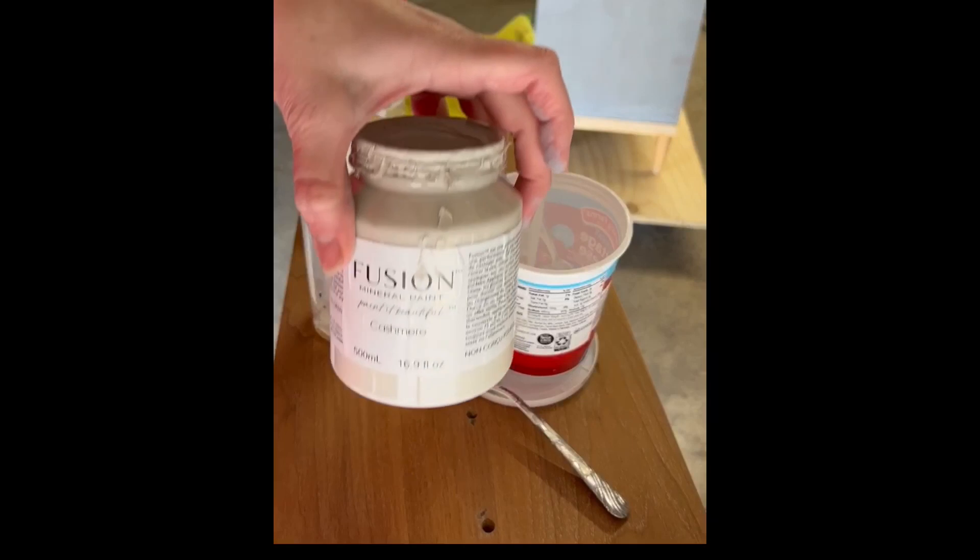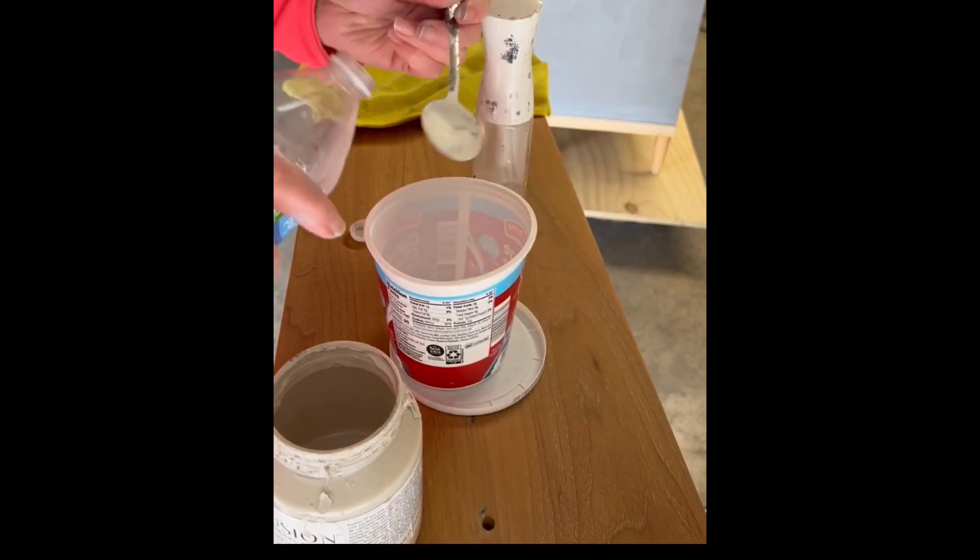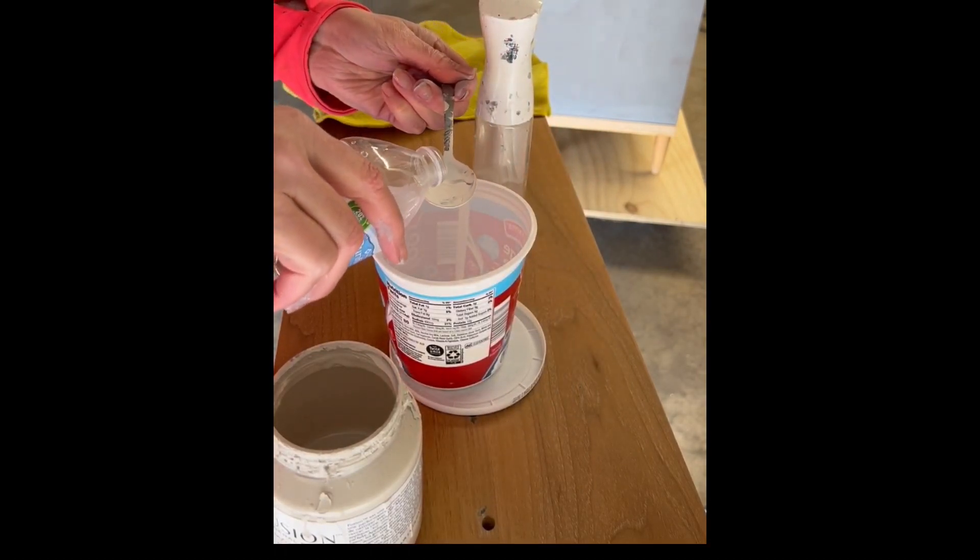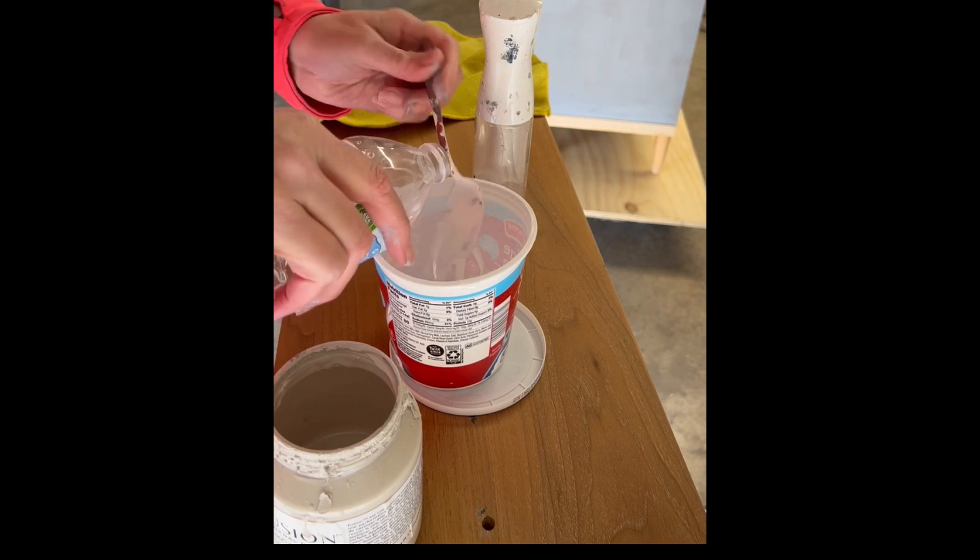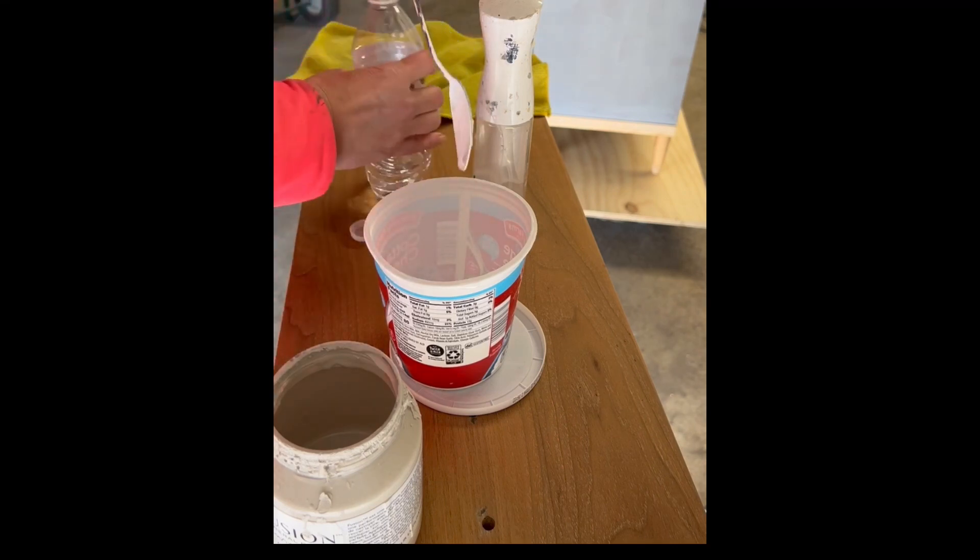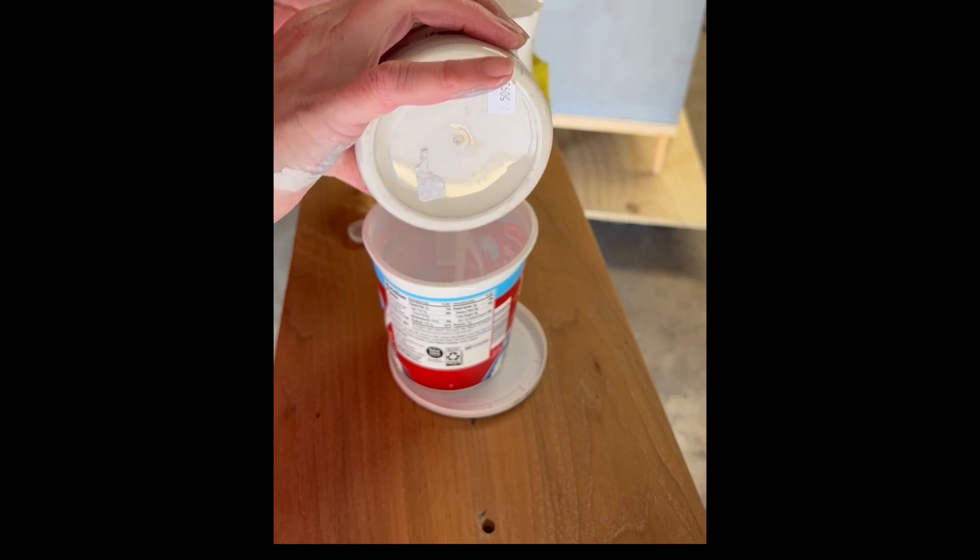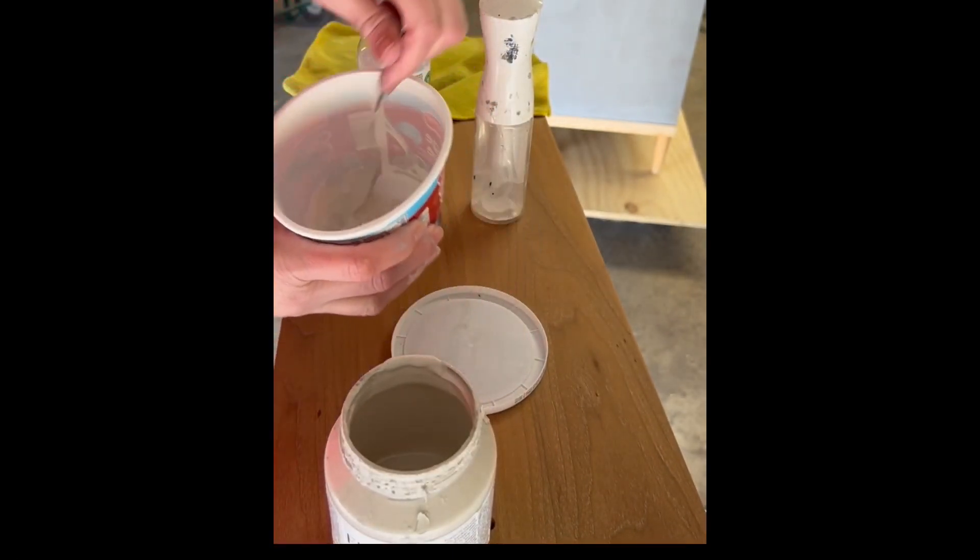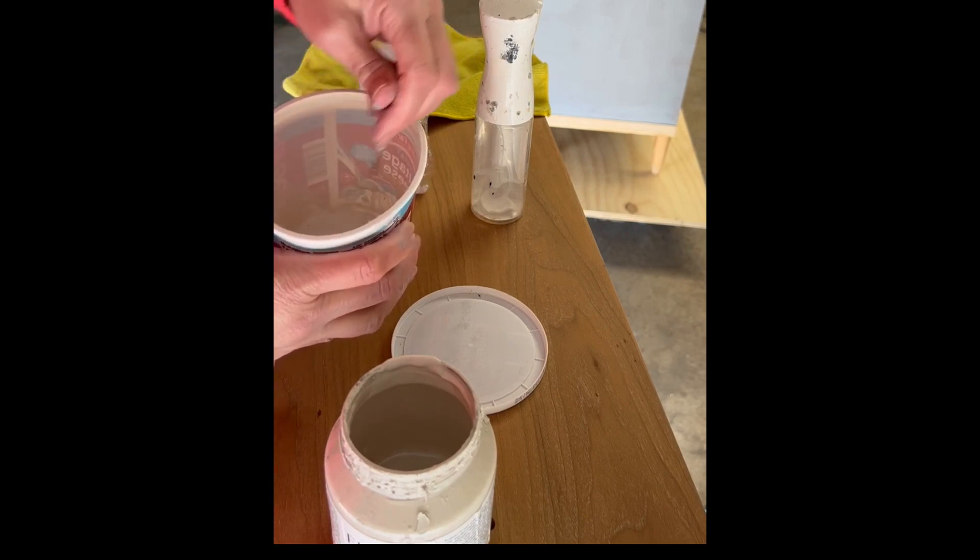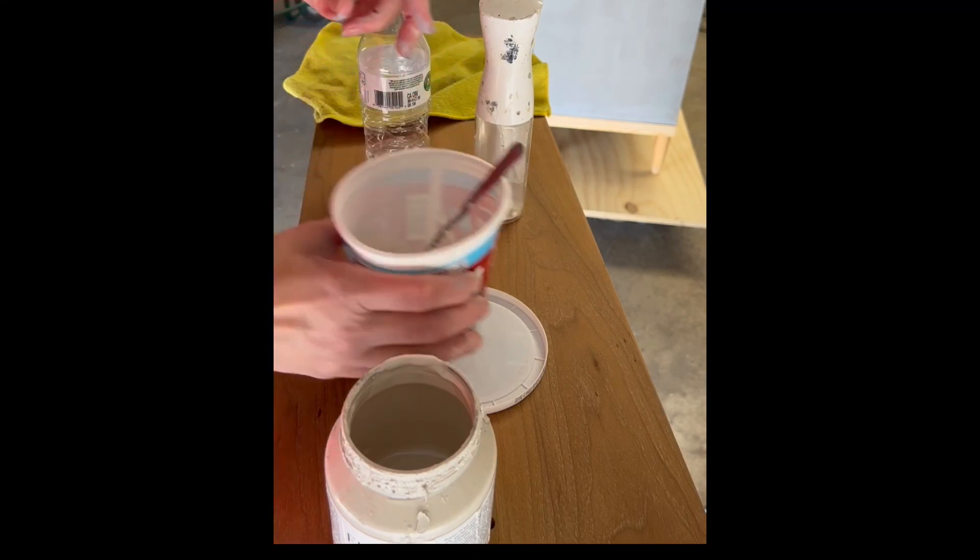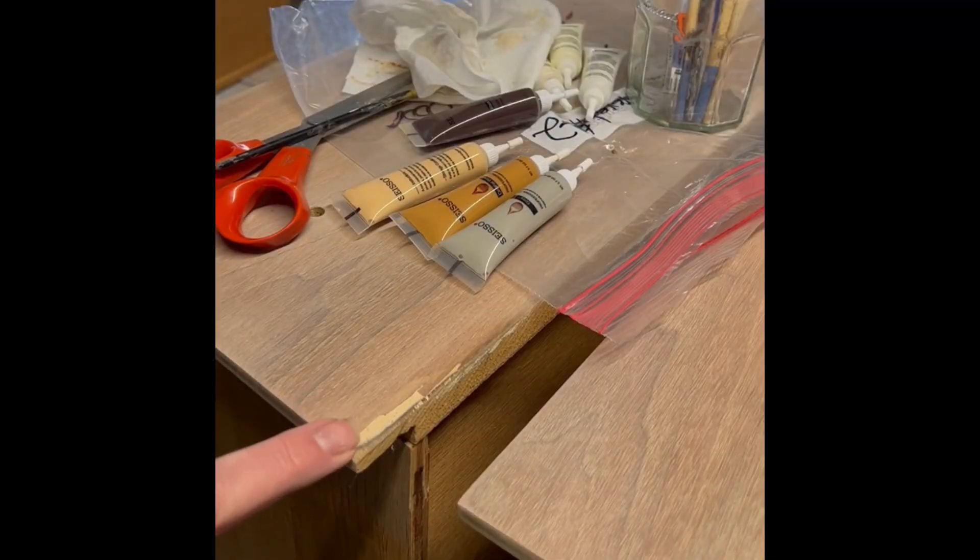Now I'm going to do my whitewash. I'm using Cashmere by again Fusion Mineral Paint, and I'm going to do a whitewash first on my drawers and then I'm going to go back and do a tan wash. You can do lots of different ratios. This particular one I'm doing four parts water and one part paint, and that's going to just give me a nice real basic watered-down paint wash. I like to mist the board and then I just simply wipe on the paint wash.